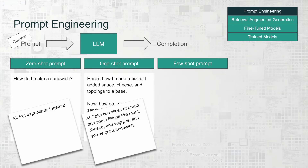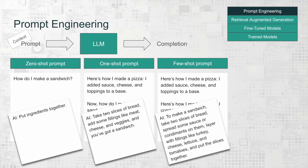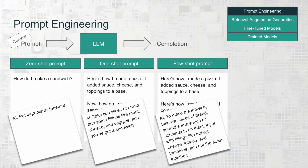And finally, let's take a look at few-shot prompts. Here I provide several examples. The whole prompt sounds like: here's how I made a pizza — I added sauce, cheese, and toppings to a base. And here's how I made a salad — I combined veggies and dressing. So now, how do I make a sandwich? AI would reply: to make a sandwich, take two slices of bread, spread some sauce or condiments, layer with fillings like turkey, cheese, lettuce, and tomatoes, and put the slices together. That's much more detailed. Calling an API with a prompt that includes extra context is very simple, which makes it a popular choice for companies just starting with LLMs. It's especially useful for teams with limited AI expertise or resources. This method is effective for general tasks, but costs can add up if you're handling a lot of requests against a paid API provider.